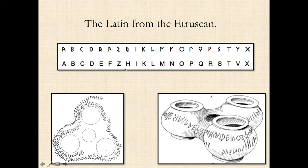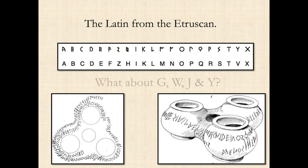In this early Latin alphabet there's no G — Z appears at the front. There's no J, and no U, no W. Y hadn't been introduced yet — Y comes in later for Greek words. We'll talk about the letters G, W, J, and Y.